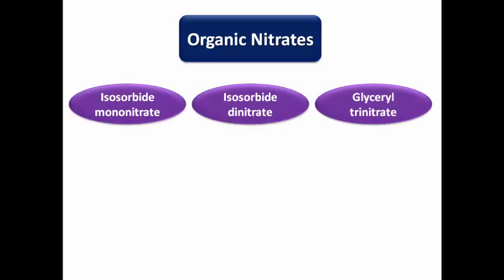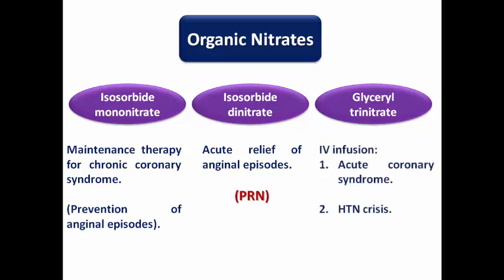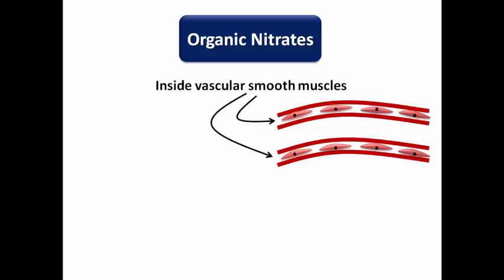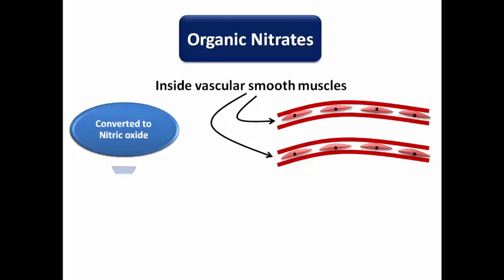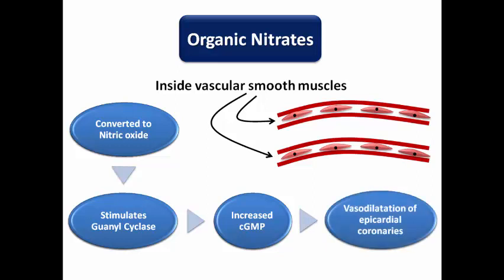We mentioned in the last video that we have three types of nitrates: isosorbide mononitrate used as maintenance therapy for chronic coronary syndrome; isosorbide dinitrate used for acute relief of anginal episodes; and glyceryl trinitrate used as IV infusion for acute coronary syndrome and hypertensive crisis. Their action is through vascular smooth muscle cells, where nitrates are converted to nitric oxide, stimulating guanylate cyclase and increasing cyclic GMP, which results in vasodilation of the epicardial coronaries, venodilatation, and reduced venous return to the right side of the heart, reducing pulmonary venous congestion in heart failure patients.